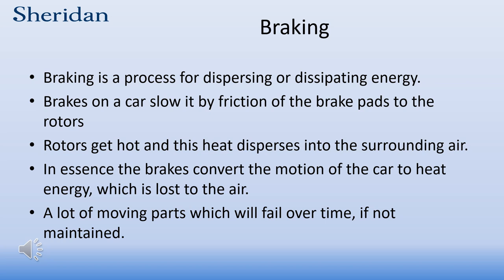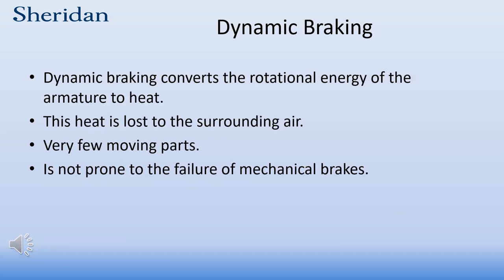These can fail due to wear of the pads and the rotors and because there are moving parts. Dynamic braking is the technique of electrically dissipating the rotational energy of an armature of a DC motor. By use of a resistor and load contacts from a contactor, a motor can be stopped or slowed by turning the rotational energy into heat.